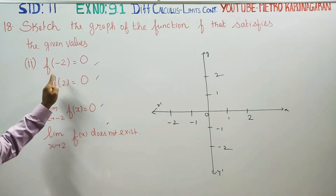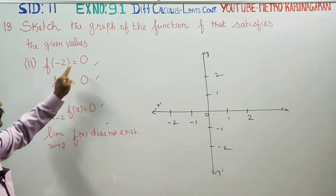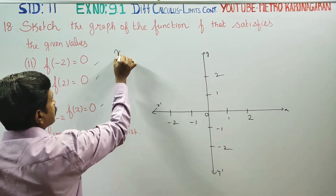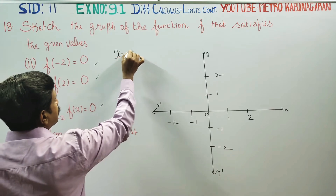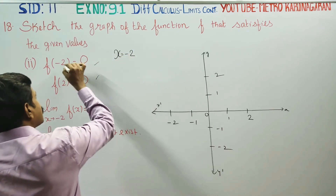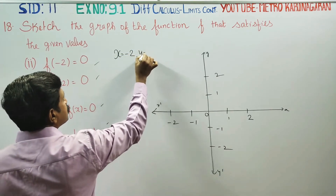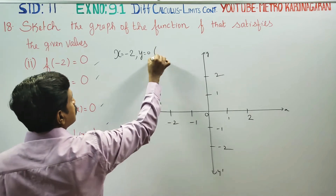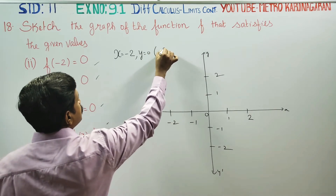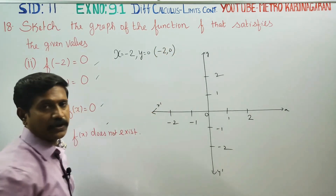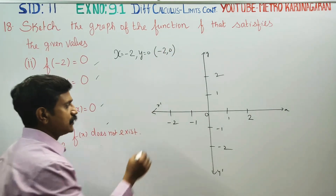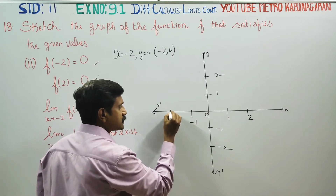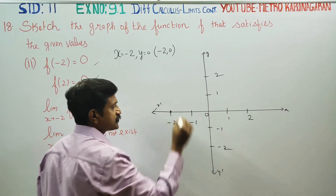F of minus 2 is equal to 0. So if x is equal to minus 2, then y is equal to 0. The ordered pair is minus 2, 0. This is one point.